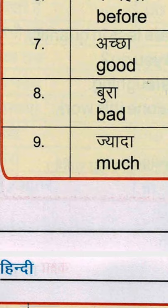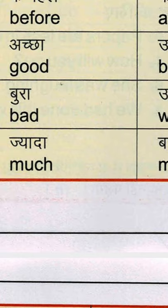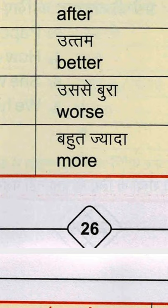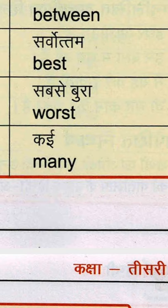इस तरीके से जैसे good, better, best और bad, worse, worst — एक दूसरे से जुड़े हुए हैं। फिर है ज्यादा यानि much — M-U-C-H. फिर थोड़ा और ज्यादा — more — M-O-R-E. फिर कई, बहुत सारे — many — M-A-N-Y.